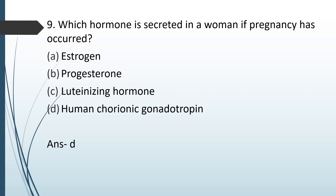The correct answer is option D, human chorionic gonadotrophin — a hormone produced by women during pregnancy. Estrogen, progesterone, and luteinizing hormone are hormones produced in normal women who have not been pregnant as well. Interesting fact: human chorionic gonadotrophin is the hormone detected by the rapid pregnancy kit, in which urine of a pregnant female is tested for its presence. If this hormone is present, the rapid pregnancy kit shows positive pregnancy.